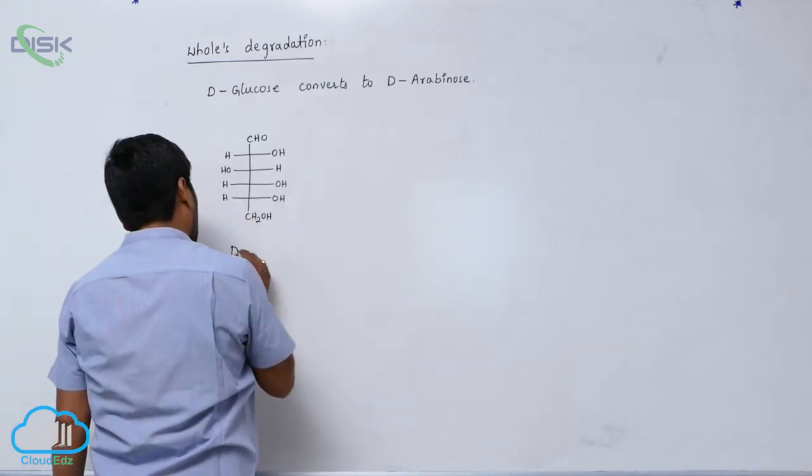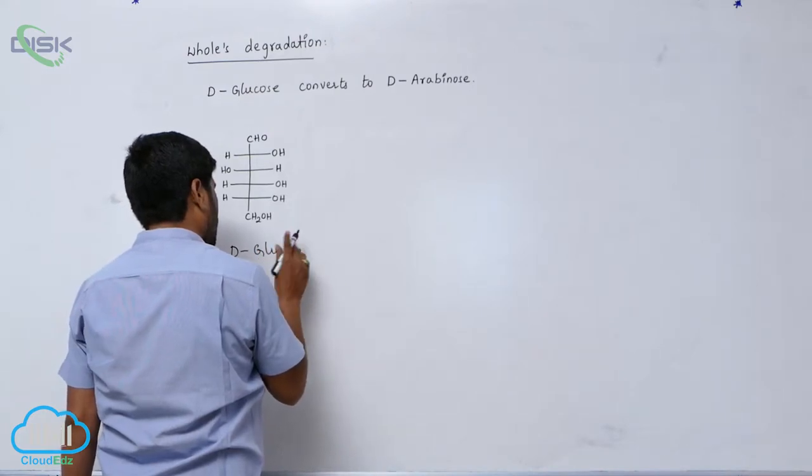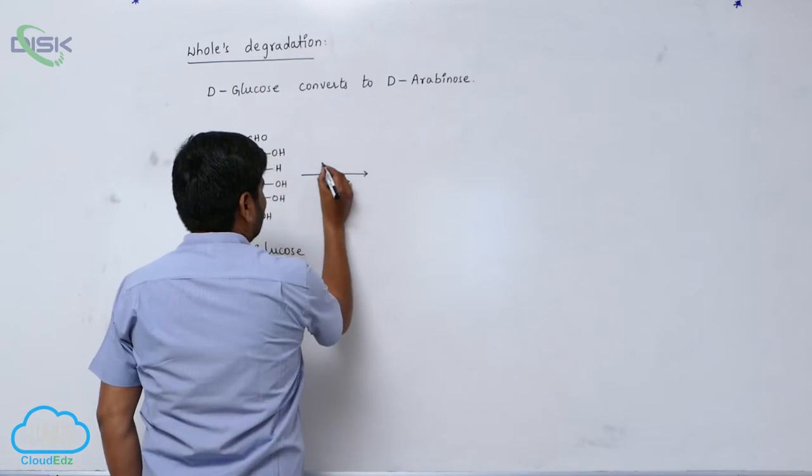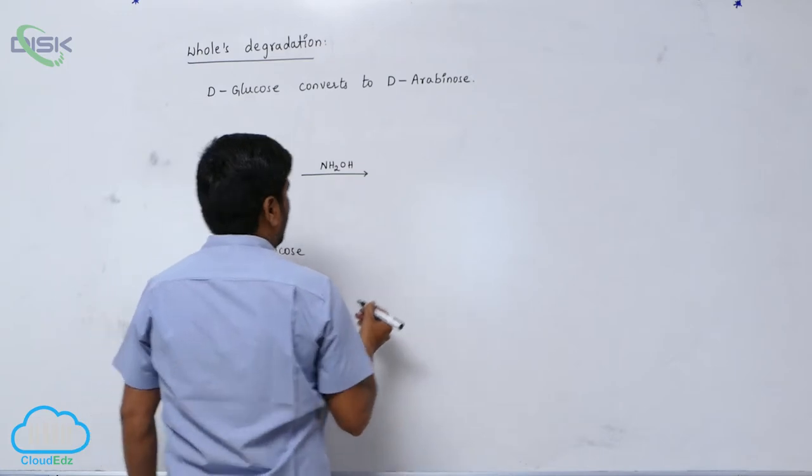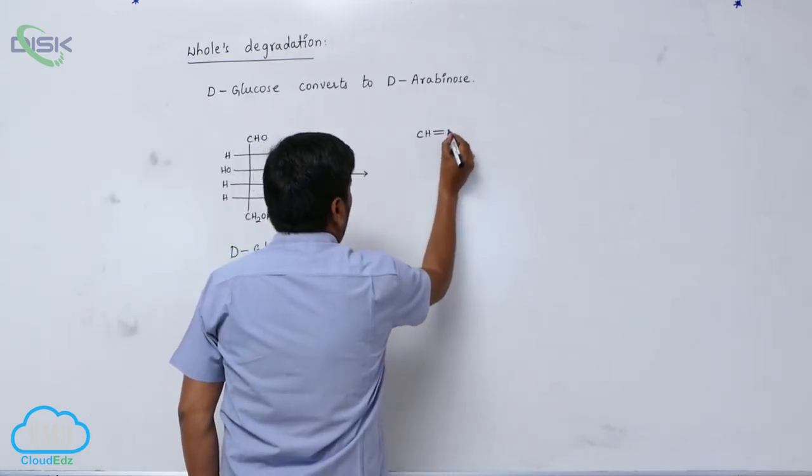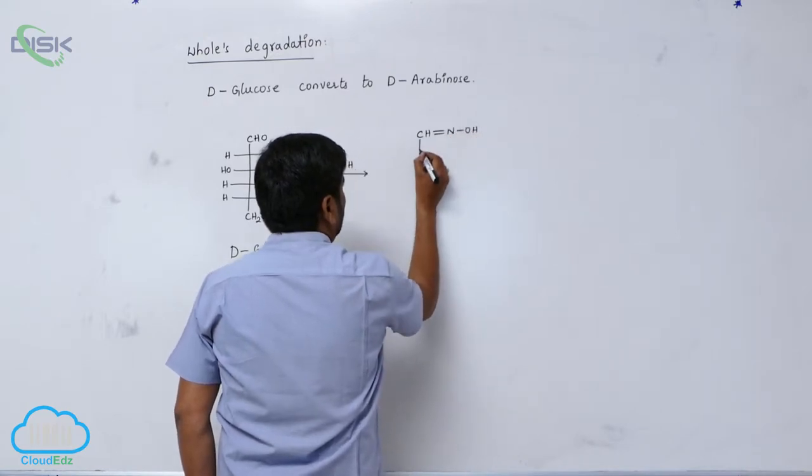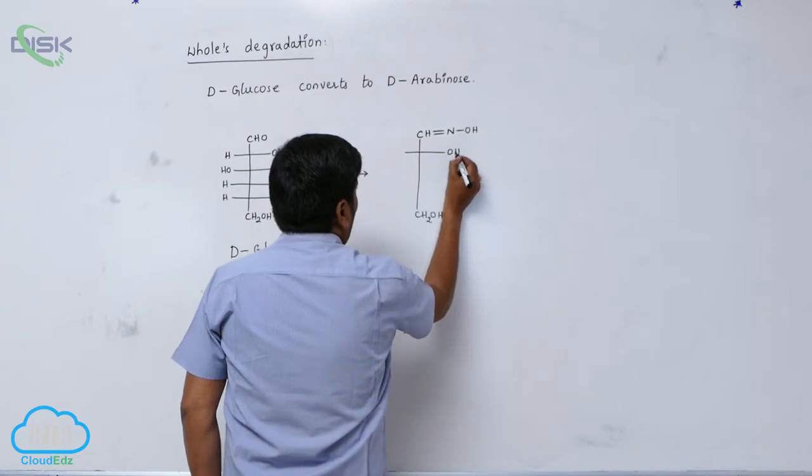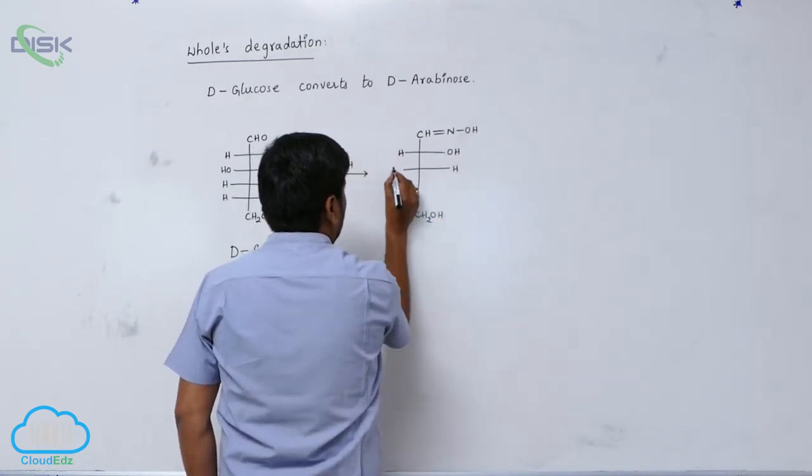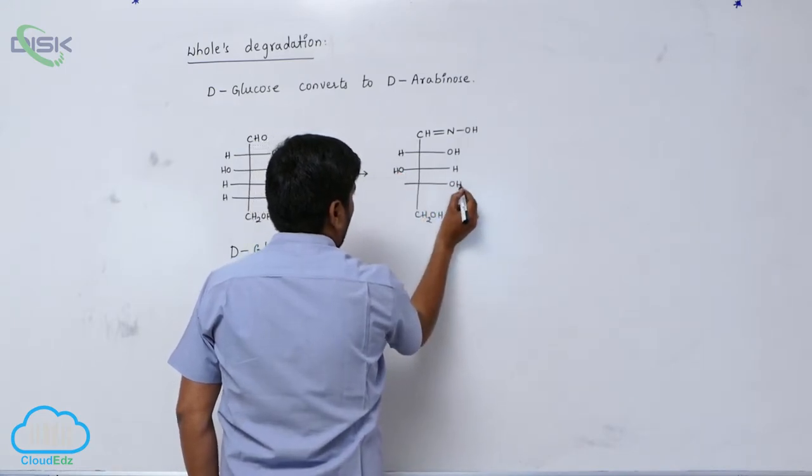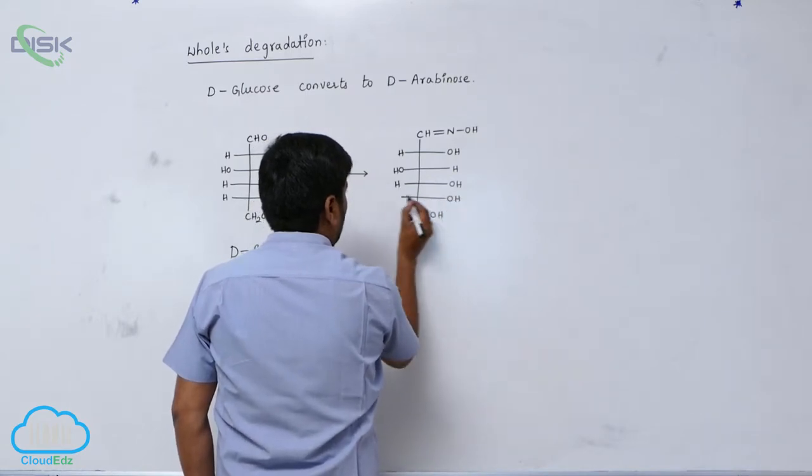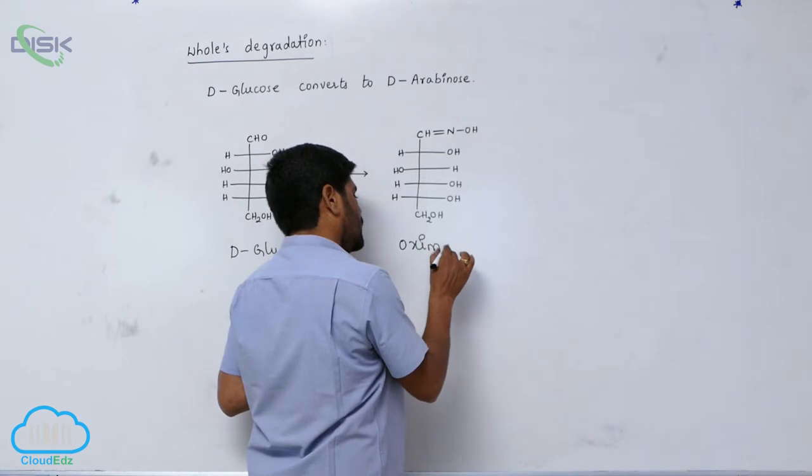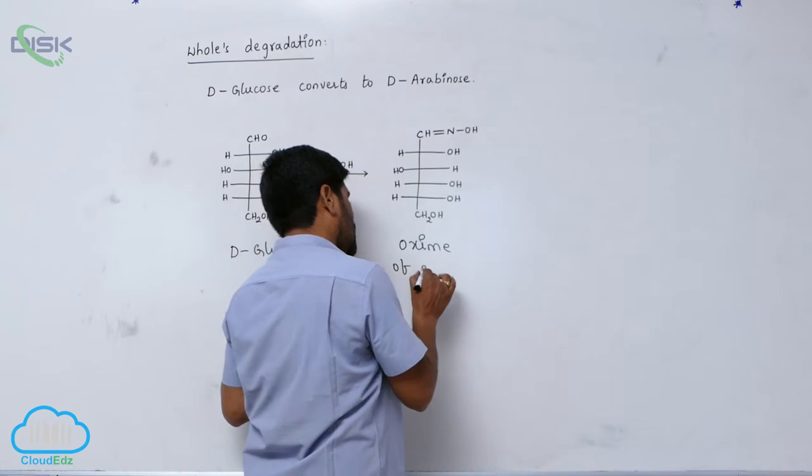This is known as D-glucose. This D-glucose reacts with hydroxylamine. CH double bond NOH, CH2OH, OH hydrogen, hydrogen OH, this is OH. This is known as oxime of glucose, glucose monooxime, oxime of glucose.